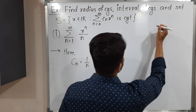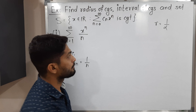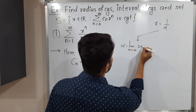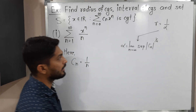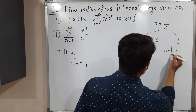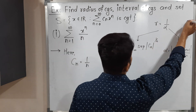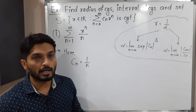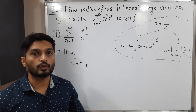The radius of convergence is denoted by R and its formula is 1 by alpha. Alpha can be calculated in two different ways. The first way is the limit as n tends to infinity of the supremum of mod Cn raised to 1 by n. The second way is alpha equals the limit as n tends to infinity of mod Cn+1 upon Cn. Generally when we have a power of n we go for the first formula; otherwise we go for the second. Here we don't have any power n, so I will go for the second formula.